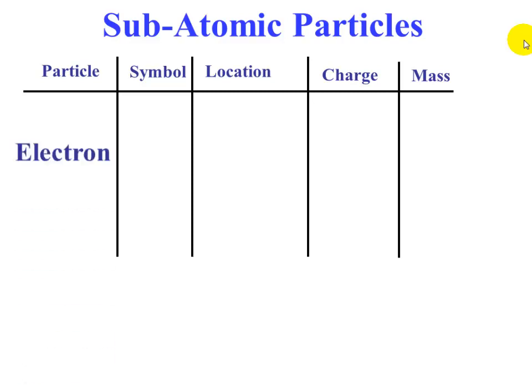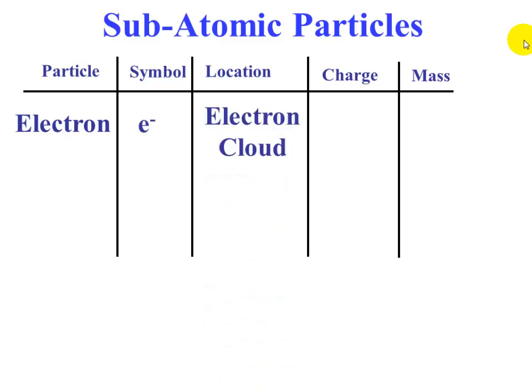The first particle is the electron. The symbol for an electron is e-. The location of the electron is in the electron cloud. The charge is -1, and the mass is so close to zero that we just say it's almost zero.